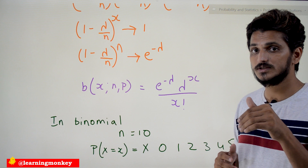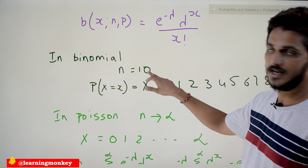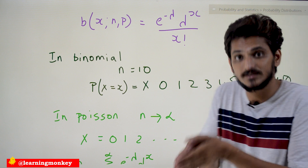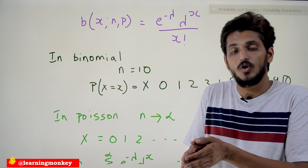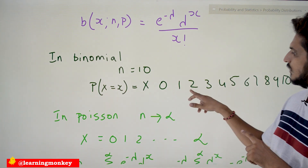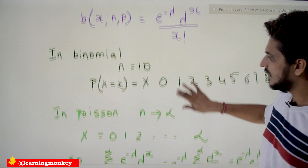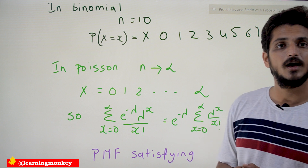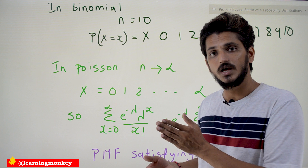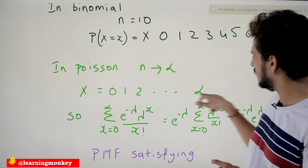One more important point: in binomial distribution with n = 10 experiments, the random variable x takes values 0, 1, 2, …, 10 successes. Similarly in Poisson's distribution, as n tends to infinity, x can take 0, 1, 2, … up to infinite successes. That is why the random variable x goes from 0 to infinity.